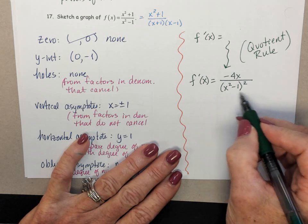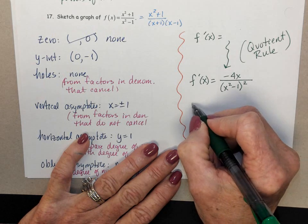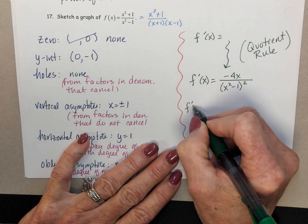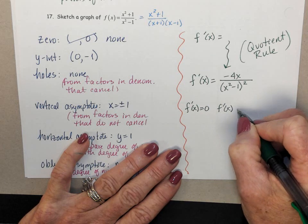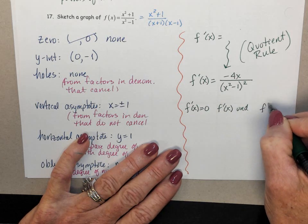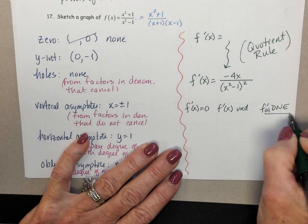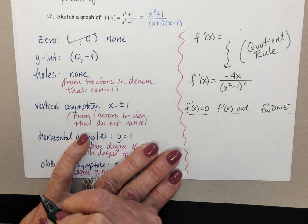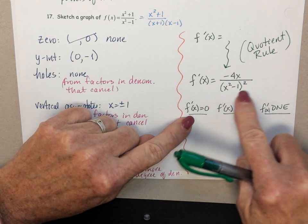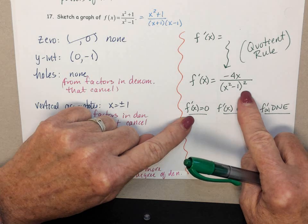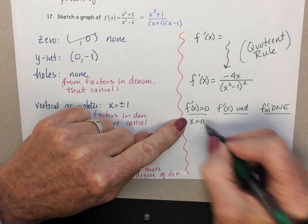And we are interested then, once we have that derivative, in finding where that derivative is equal to 0. f prime undefined and f prime non-existent. f prime equal to 0, so where this derivative is equal to 0, that will happen when the numerator is equal to 0, so at x equals 0.